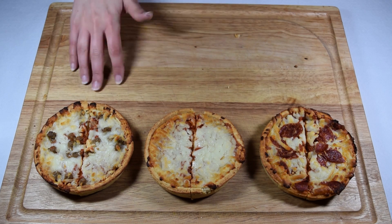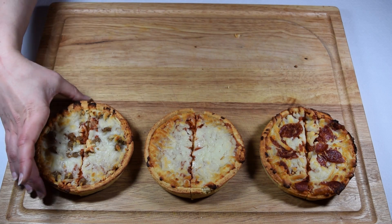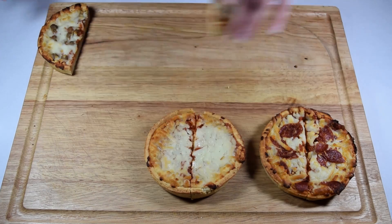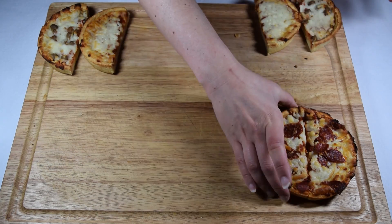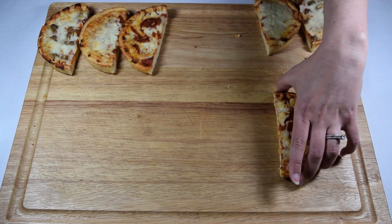Well, we started by splitting each pizza into half. So you would get half the sausage pizza, they would get half. You would get half of the cheese, they would get half. You would get half of the pepperoni, they would get half.